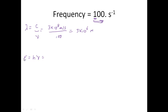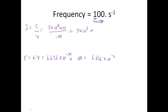So what's our energy? Our energy is Planck's constant, which is 6.626 times 10 to the minus 34th, times the frequency. And the frequency is 100. So that's going to be equal to 6.626 times 10 to the minus 32nd joules for our energy, which isn't much — it's a very, very long wave.